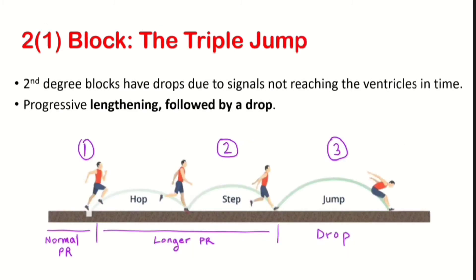The second heart block is composed of 2 different ones, but both contain a drop, which is due to the electrical signals not reaching the ventricles in time. In the first one, called Mobitz type 1, we will have a lengthening of the PR interval followed by a drop of the QRS. Think of the Olympic triple jump, where an athlete runs, hops, and jumps.